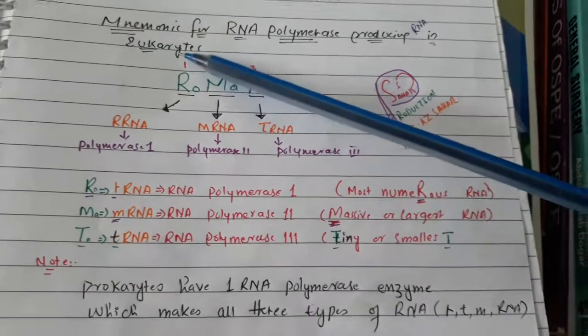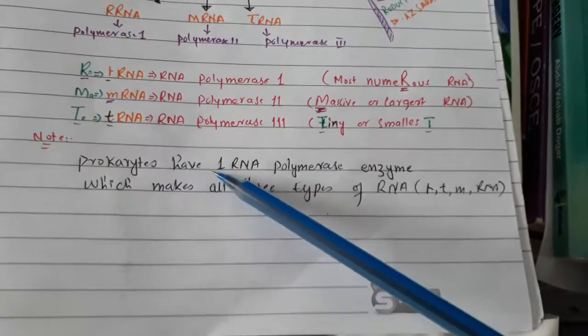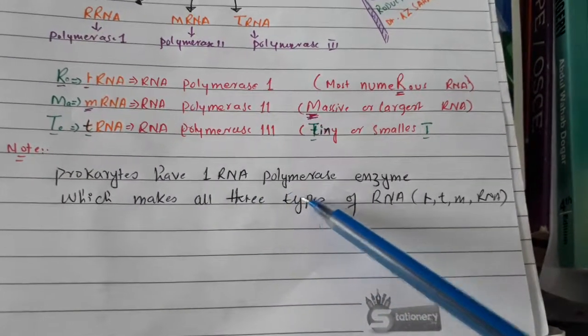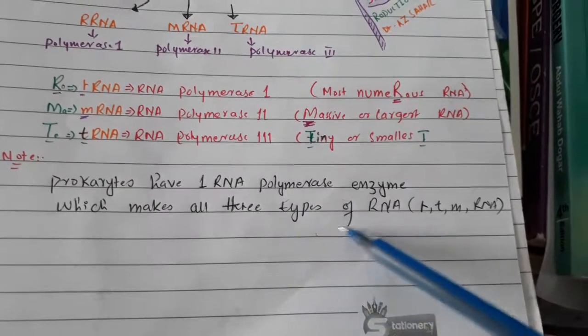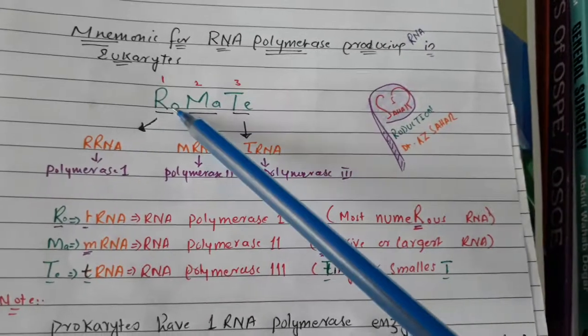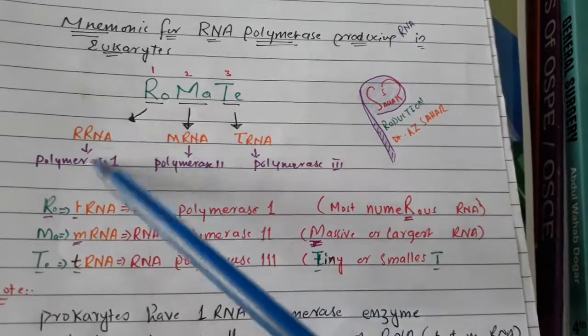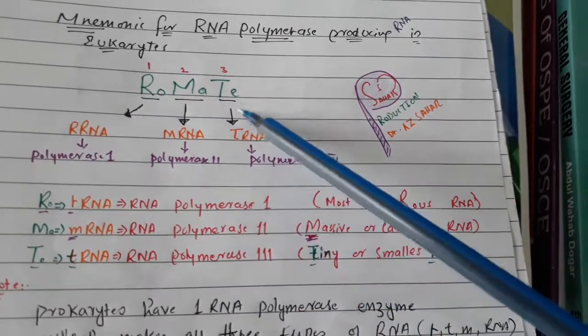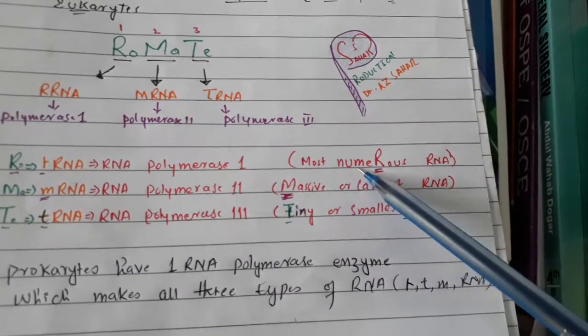This is for eukaryotes, remember. In prokaryotes we just have one RNA polymerase enzyme which makes all three types of RNA like rRNA, tRNA, and mRNA, so we don't need to remember this. But for eukaryotes we have to remember the mnemonic ROOMATE: rRNA polymerase 1, mRNA polymerase 2, tRNA polymerase 3.